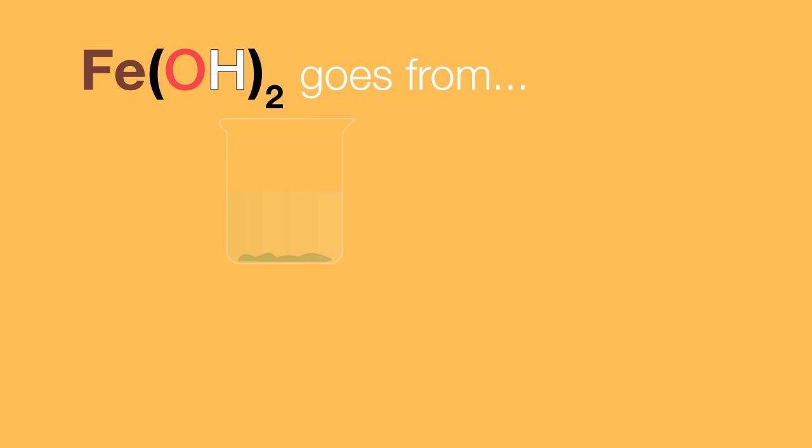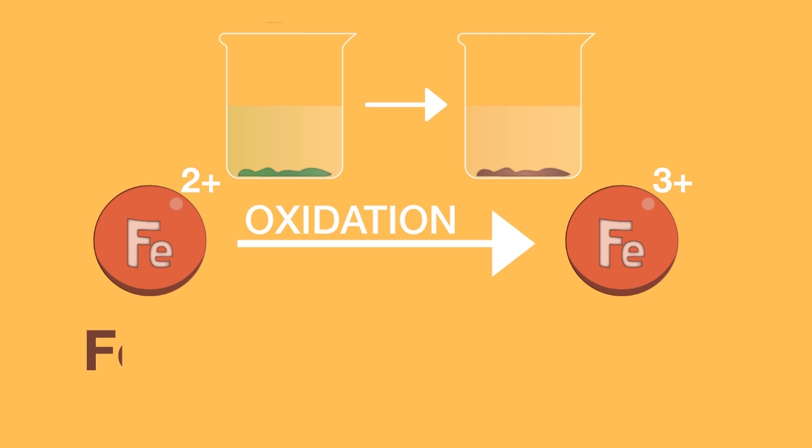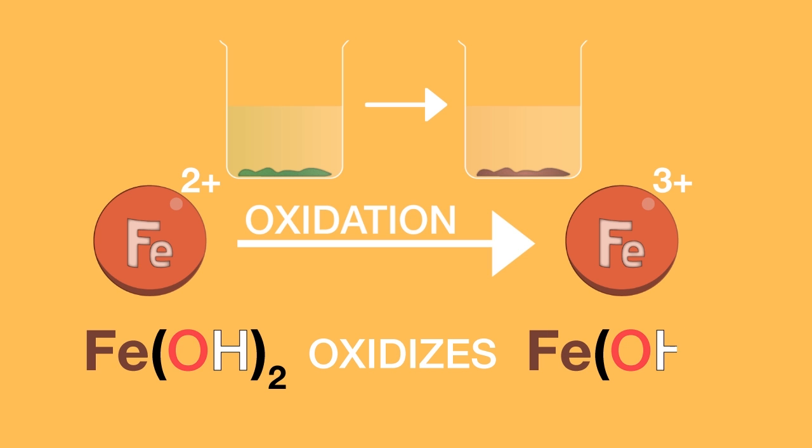Iron 2 hydroxide goes from green to reddish brown due to the oxidation of iron 2 plus to iron 3 plus. Hence, on standing, iron 2 hydroxide oxidizes to iron 3 hydroxide.